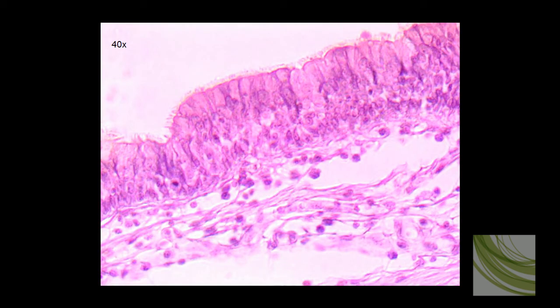And here we can see that same slide using the 40X objective. And we can see very clearly the cilia. Here's the basement membrane that runs along. This would be the apical surface, and we can even see the various nuclei mixed in here, and what looks like a few goblet cells mixed in as well.